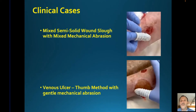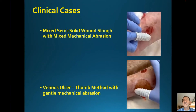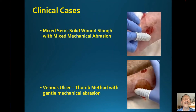I'm going to show you two more videos — one of a mixed, semi-solid wound slough with a mixed diabetic foot ulcer with some crusting, and then a venous ulcer where they decided to deploy the finger cot on their thumb. You may say you've got a really large decubitus or large foot ulcer and need something bigger — you can just use two of them on your index and middle finger and you've got twice the surface area.